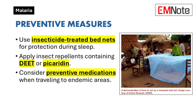Preventive Measures: Preventing malaria involves several strategies — insecticide-treated bed nets, which provide protection during sleep; insect repellents, with products containing picaridin being effective; and preventive medications, where prophylaxis may be necessary for travelers to endemic areas.